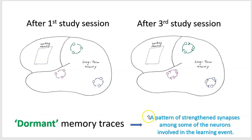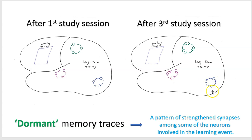What is a memory in the brain? It's a pattern of strengthened synapses among some of the neurons involved in the learning event. When we see or hear something, some population of neurons gets activated, and a subset of those neurons grow stronger connections with each other, forming a network that represents what we saw and heard. A memory trace, when we're not using that information, exists as a set of strengthened synapses among neurons activated during the learning event — that's a dormant memory trace.